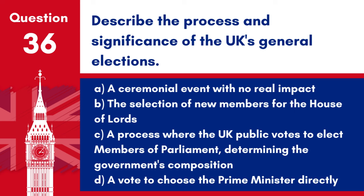Question 36: Describe the process and significance of the UK's general elections. a. A ceremonial event with no real impact. b. The selection of new members for the House of Lords. c. A process where the UK public votes to elect members of Parliament, determining the government's composition. d. A vote to choose the Prime Minister directly. Answer: c. A process where the UK public votes to elect members of Parliament, determining the government's composition. General elections are fundamental to the democratic process, deciding which party forms the government.